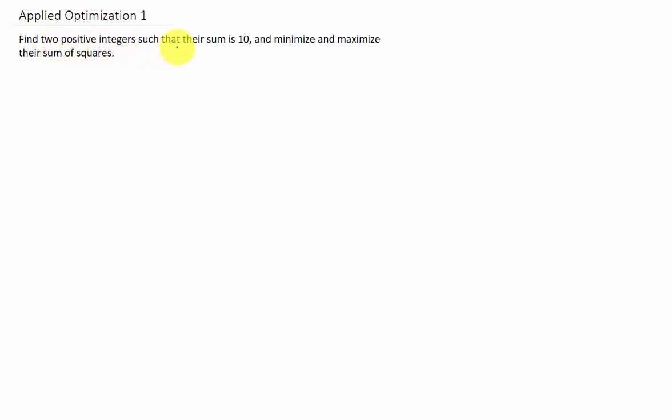So we have two positive integers such that their sum is 10, and we want to minimize and maximize their sum of squares.